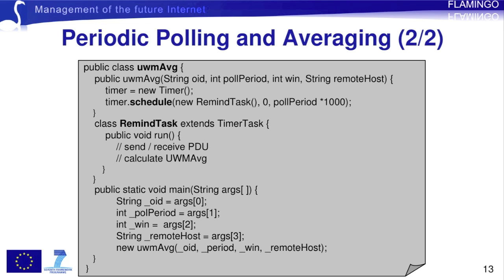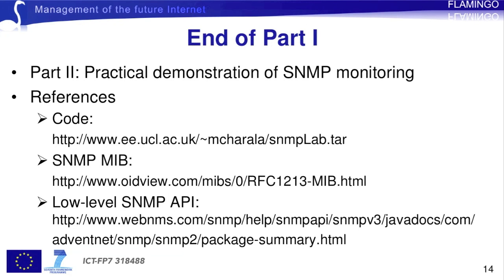This concludes the first part of the tutorial. In the second part, I will demonstrate how the management applications described can be used in practice to poll a real SNMP agent. Here are some references that can be useful. The Java code for the three exercises can be found in a tar file on my personal webpage. The second link is for the SNMP MIB, and on the third one you can find the Java classes and methods for the low-level SNMP API used. Thanks for tuning in.